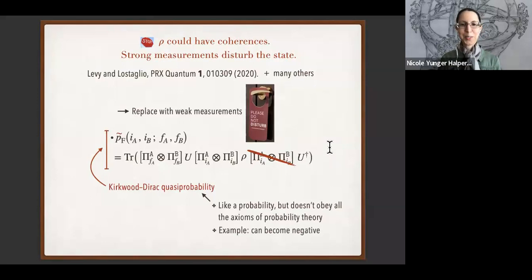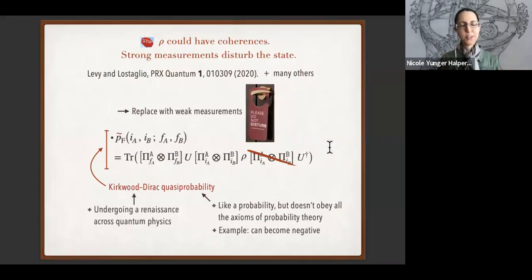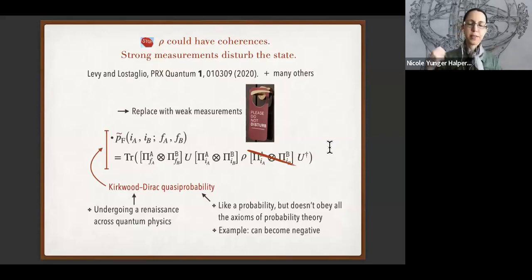Kirkwood-Dirac quasi-probabilities are my favorite quasi-probabilities in all of quantum theory. Over the past few years they've proven immensely useful in quantum thermodynamics, quantum metrology, quantum chaos, quantum foundations, and more.